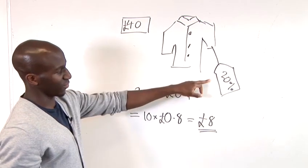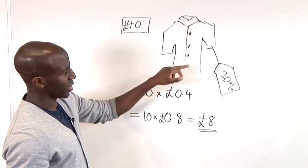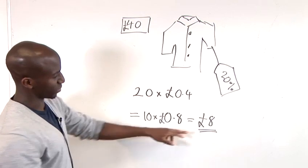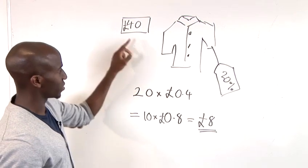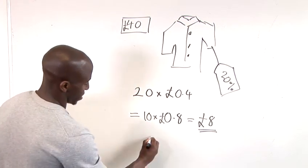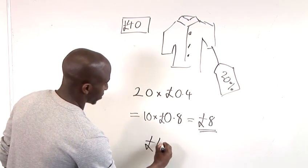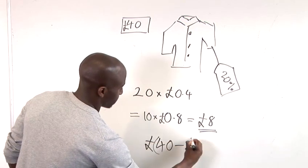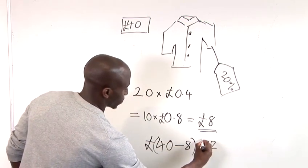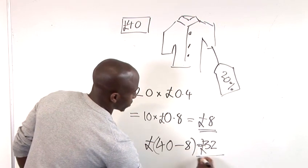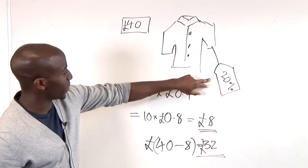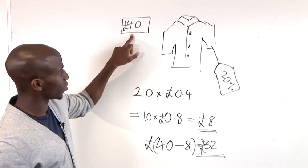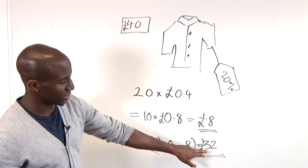So, now, obviously, if we are looking for a 20% discount or percentage change from the original price, we want to subtract this 8 pounds from this 40 pounds. And that goes like this. So, percentage change or discount of 20 pounds from 40 pounds is equal to 32 pounds.